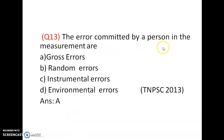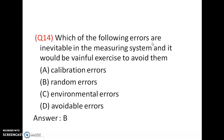The error committed by a person in the measurement is gross error — the error caused by the person or operator handling the instrument is gross error. Which of the following errors are inevitable in the measuring system? Random errors are inevitable in any measurement system — you cannot avoid them, and it would be a painful exercise to try. They are very small in magnitude and cannot be eliminated.